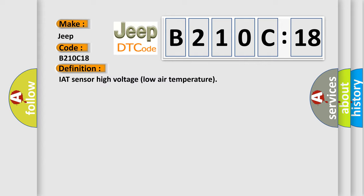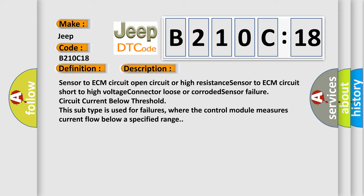And now this is a short description of this DTC code. Sensor to ECM circuit open circuit or high resistance, sensor to ECM circuit short to high voltage, connector loose or corroded, sensor failure, circuit current below threshold. This subtype is used for failures where the control module measures current flow below a specified range.